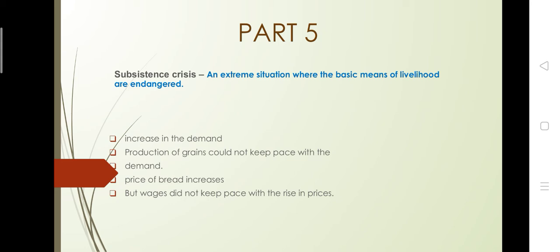But wages did not keep pace with the rise in prices. The people working in factories — or generally in the unorganised sector — their wages are not increasing. Population is increasing, demand is increasing, production is not increasing, so the price of bread will definitely increase. And with the increase in bread prices, there is no increment in salary.